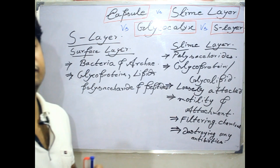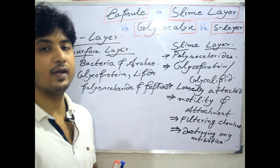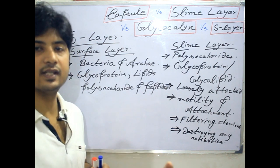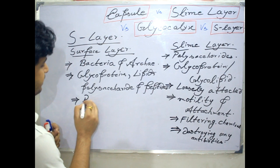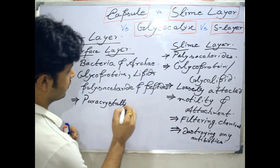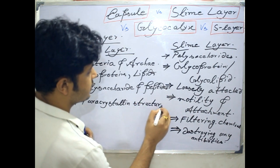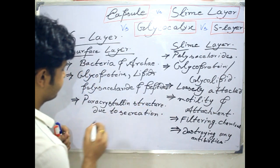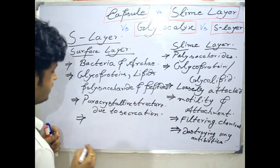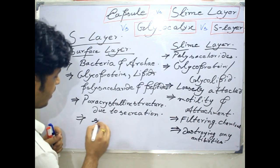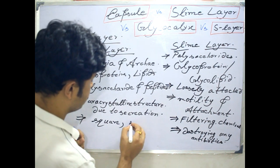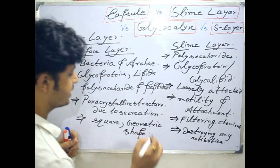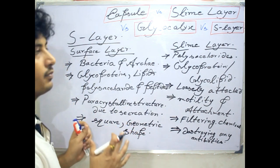The surface layer is formed due to the secretion of the bacterial cell itself. When the prokaryotic cell or archaea secretes certain substances which go outside the cell, they form a paracrystalline structure. This paracrystalline structure is the surface layer formed due to secretion. The shape may vary — it may be square or other geometric shapes — depending upon the secretion of these substances around the cell.